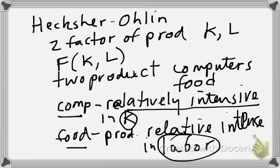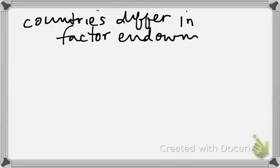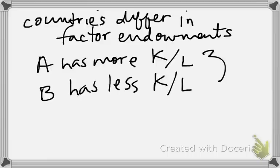That double comparison is very important in the Heckscher-Ohlin model. The model says that if two countries opened up for trade and were exactly the same, there would be no basis for trade because they'd have the same pre-trade autarky prices. So the basis for trade comes because countries differ in their factor endowments. Country A has more capital relative to labor, and country B has less capital relative to labor — these are relative to each other.